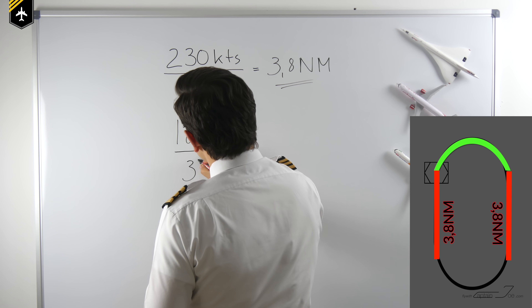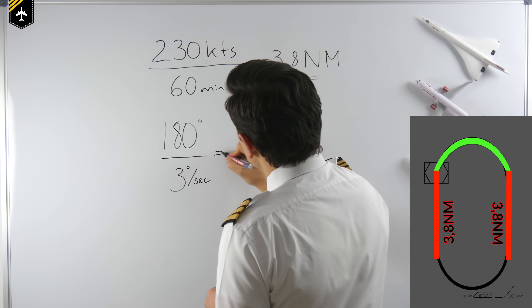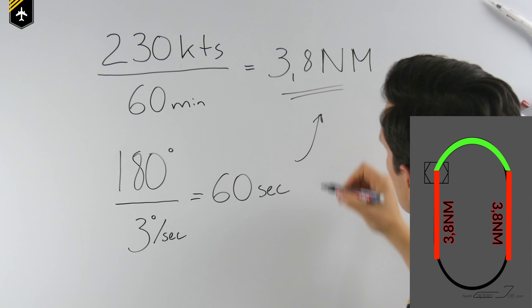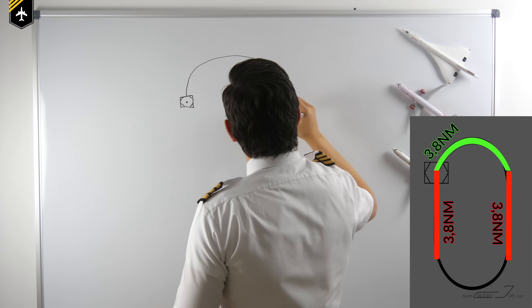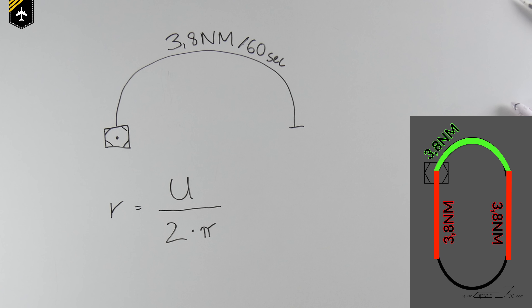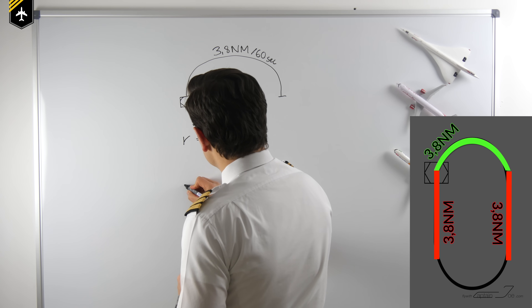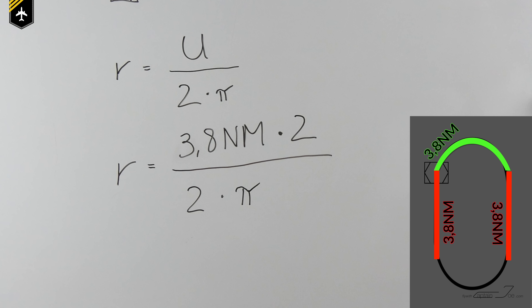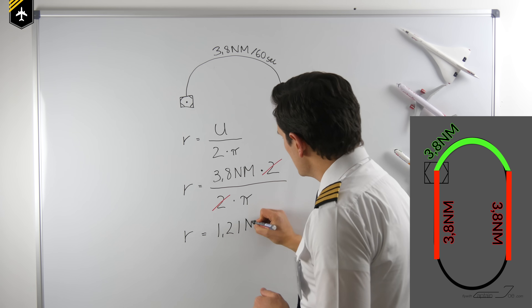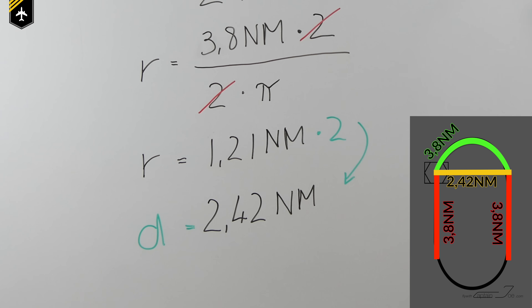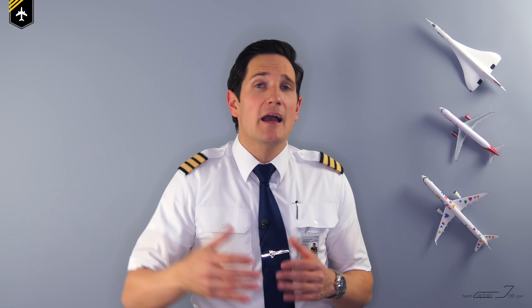To get an idea of how big a holding is in size, let's do the calculations. 230 knots divided by 60 minutes equals 3.8 nautical miles — that's how long your legs are within the holding. The fixed end is also 3.8 nautical miles because a 180-degree turn divided by 3 degrees per second — the standard turning rate at 25 degrees of bank angle — equals 60 seconds. To determine the diameter of that turn: radius r equals half the circumference times 2 divided by 2π, giving a radius of 1.21 nautical miles, so a diameter of 2.42 nautical miles. You don't necessarily need these calculations in mid-air, but it's nice to know how much space you're actually using up.